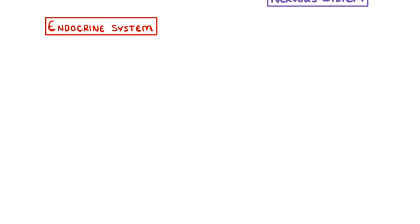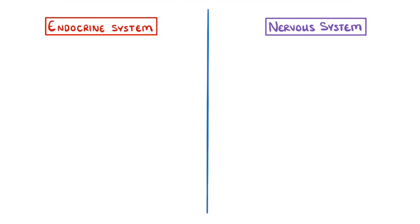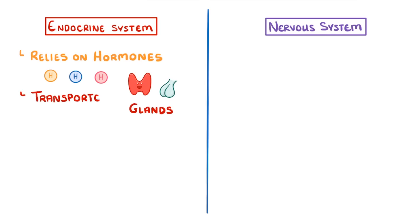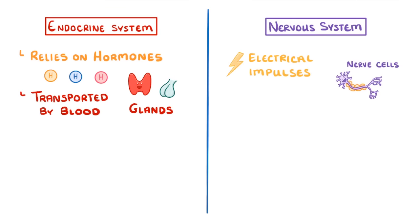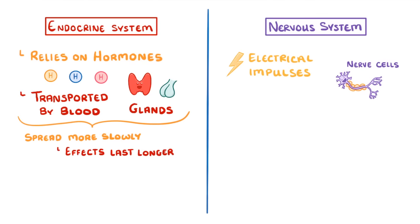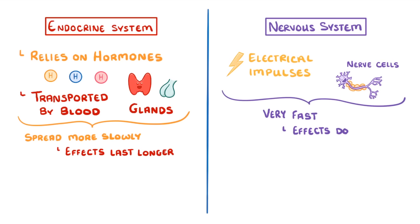Lastly, we need to know how the endocrine system differs from the nervous system. First, one relies on hormones, which are small molecules secreted by glands and transported in the blood, while the other relies mainly on electrical impulses, which are transferred along nerve cells. This means that hormones spread more slowly and their effects last longer, whereas nerve impulses are sent very fast, and the effects don't last very long — often less than a second.